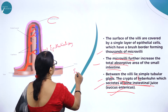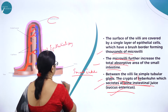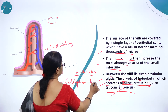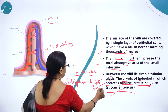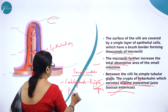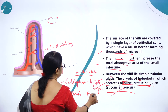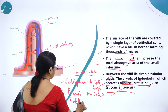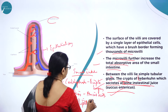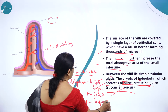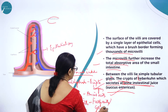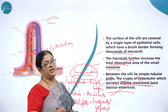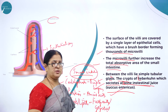Finally, the small intestine converts carbohydrates into simple sugars, proteins into amino acids, and fats or lipids into fatty acids and glycerol. This is the final job of the small intestine, which is why we say the small intestine has a great role to play in the process of digestion.